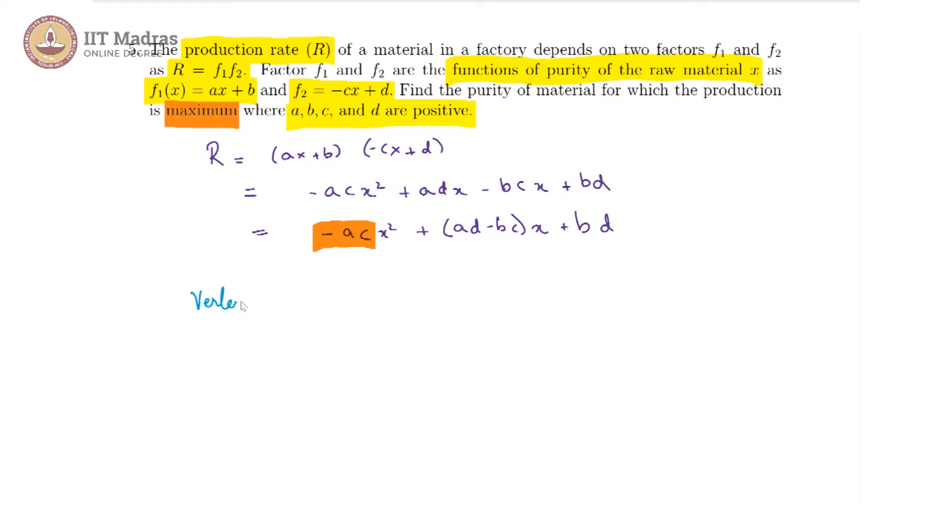The vertex is at minus b by 2a. Because here we have a, b, c, d already, let us write it down more carefully. That is the negative of coefficient of x divided by 2 times the coefficient of x squared, which in our case will be negative of ad minus bc divided by 2 times minus ac. Minus and minus cancels off.